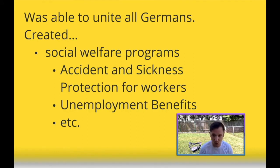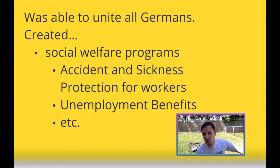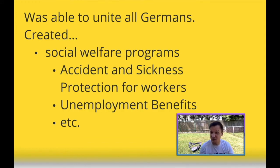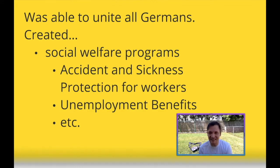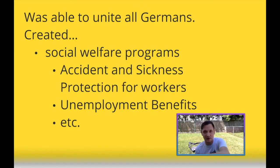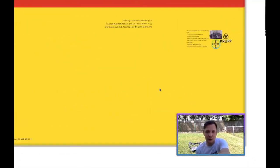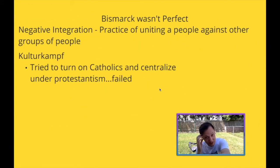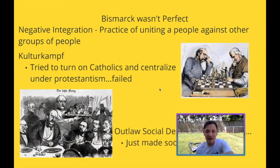Bismarck created accident and sickness protection for workers — if injured on the job the government paid your stipend to keep your family above the poverty line, and if you suffered a serious illness on the job you could be paid by the government until you recovered. They also started unemployment benefits, and this led to a huge trend across Europe including the creation of old-age pay — basically the invention of social security in Germany. Bismarck was a genius for giving in to some things liberals and socialists wanted, because as a realistic politician he knew he had to help them.